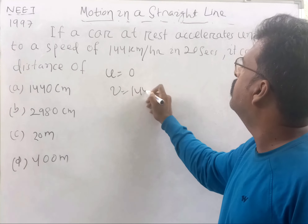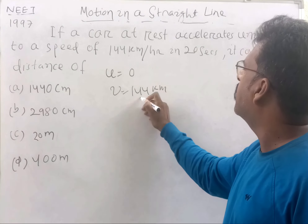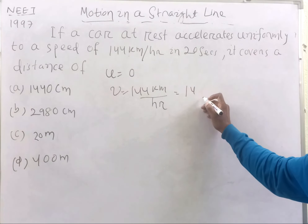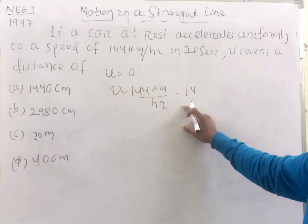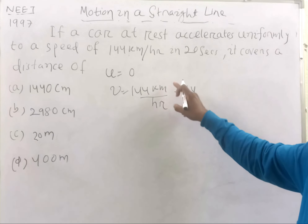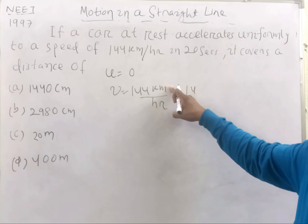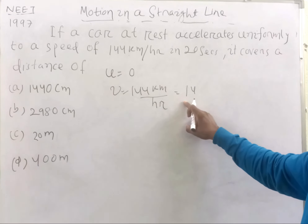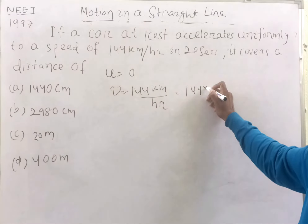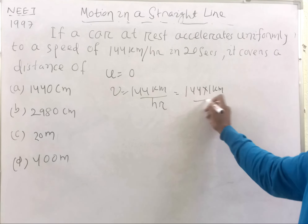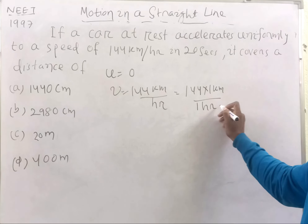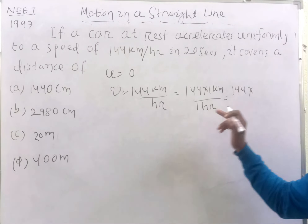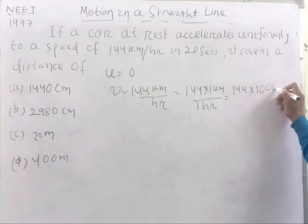So students, this is 144 km per hour. We need to convert it to SI units. You know that the SI unit is not kilometers per hour — distance is in meters and time is in seconds. So we can convert it: 144 km per hour, where 1 km equals 1000 meters.